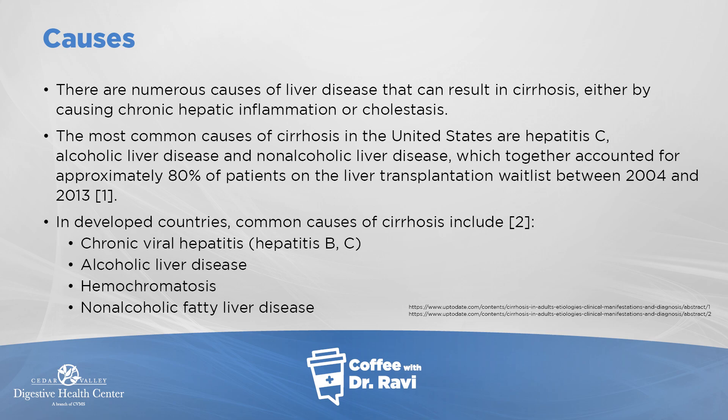Other causes of chronic liver disease include hemochromatosis, a genetic condition. Normally the body absorbs only as much iron as it needs, but in hemochromatosis the body pulls in far too much iron, which then gets deposited in the liver, skin, pancreas, and heart, and can cause cirrhosis.